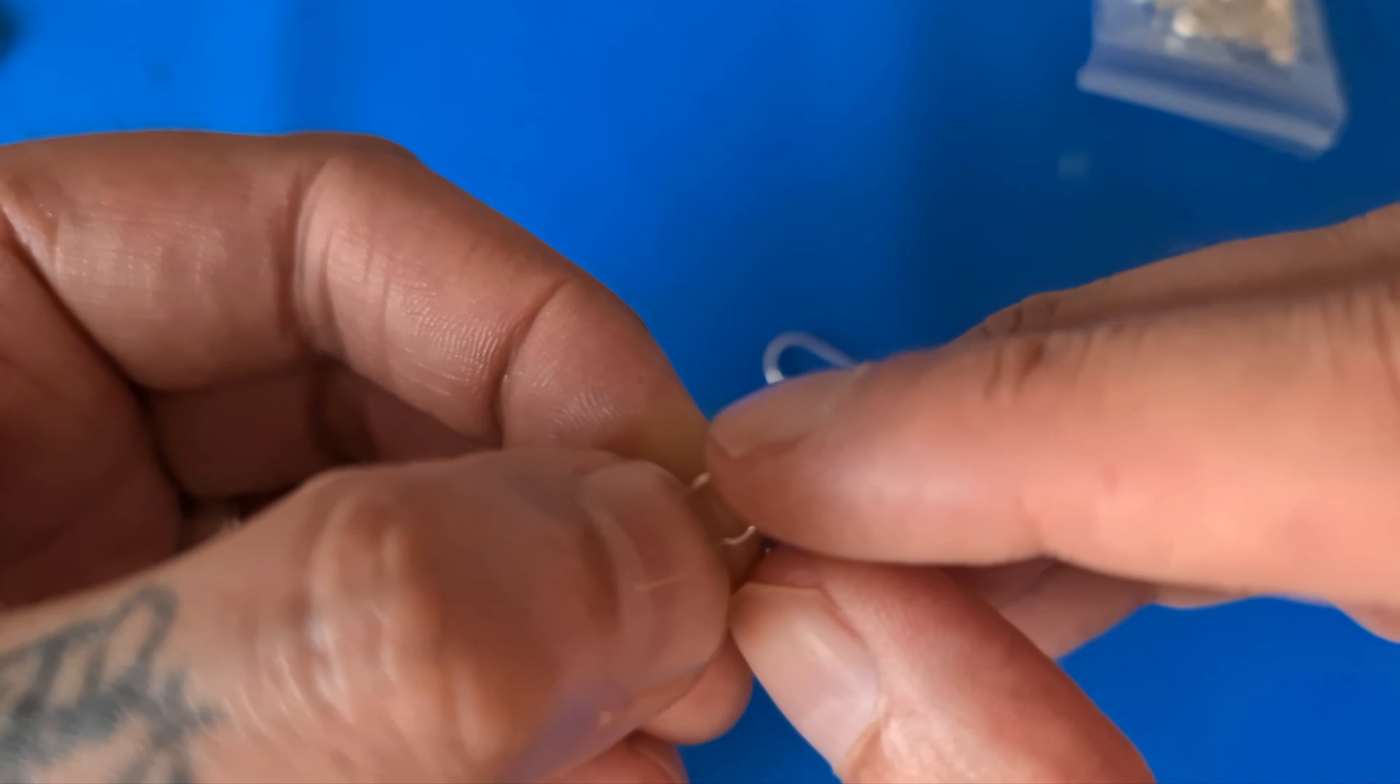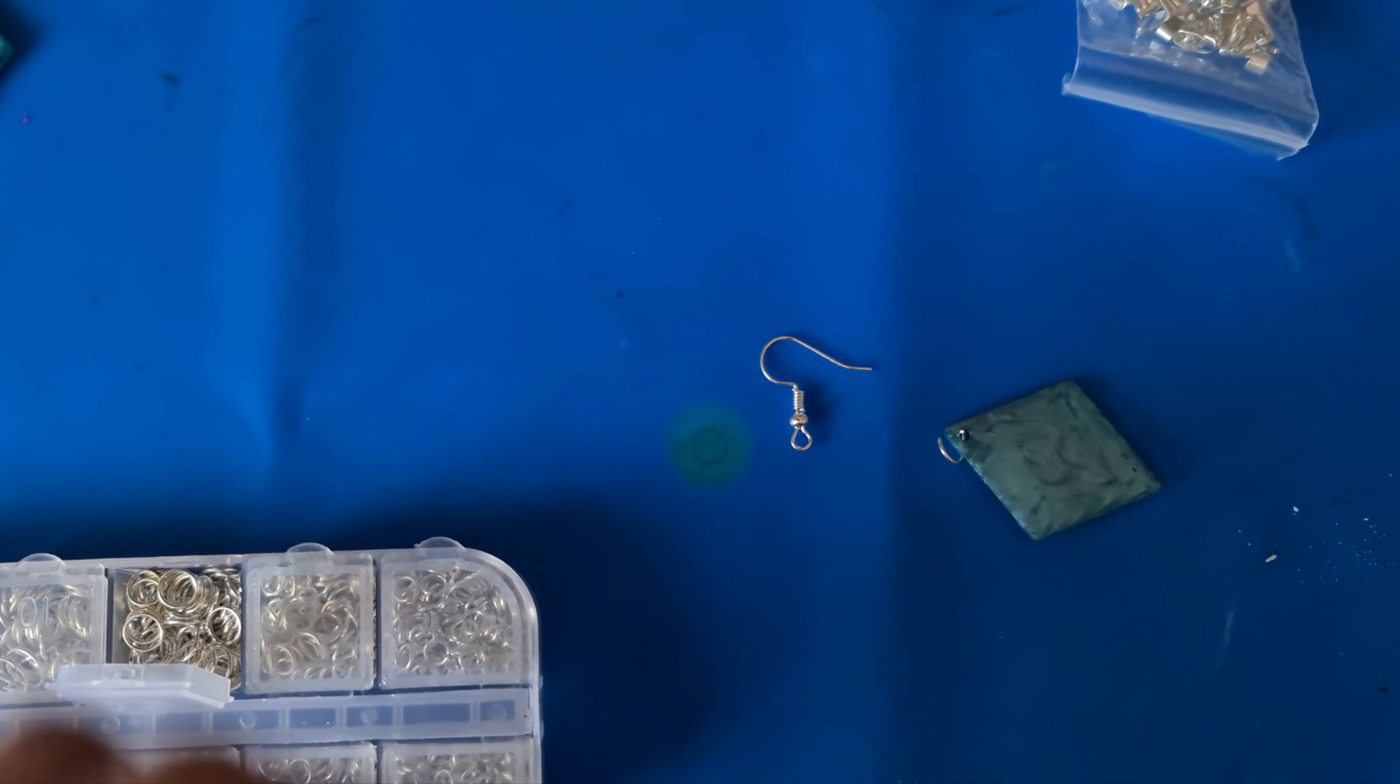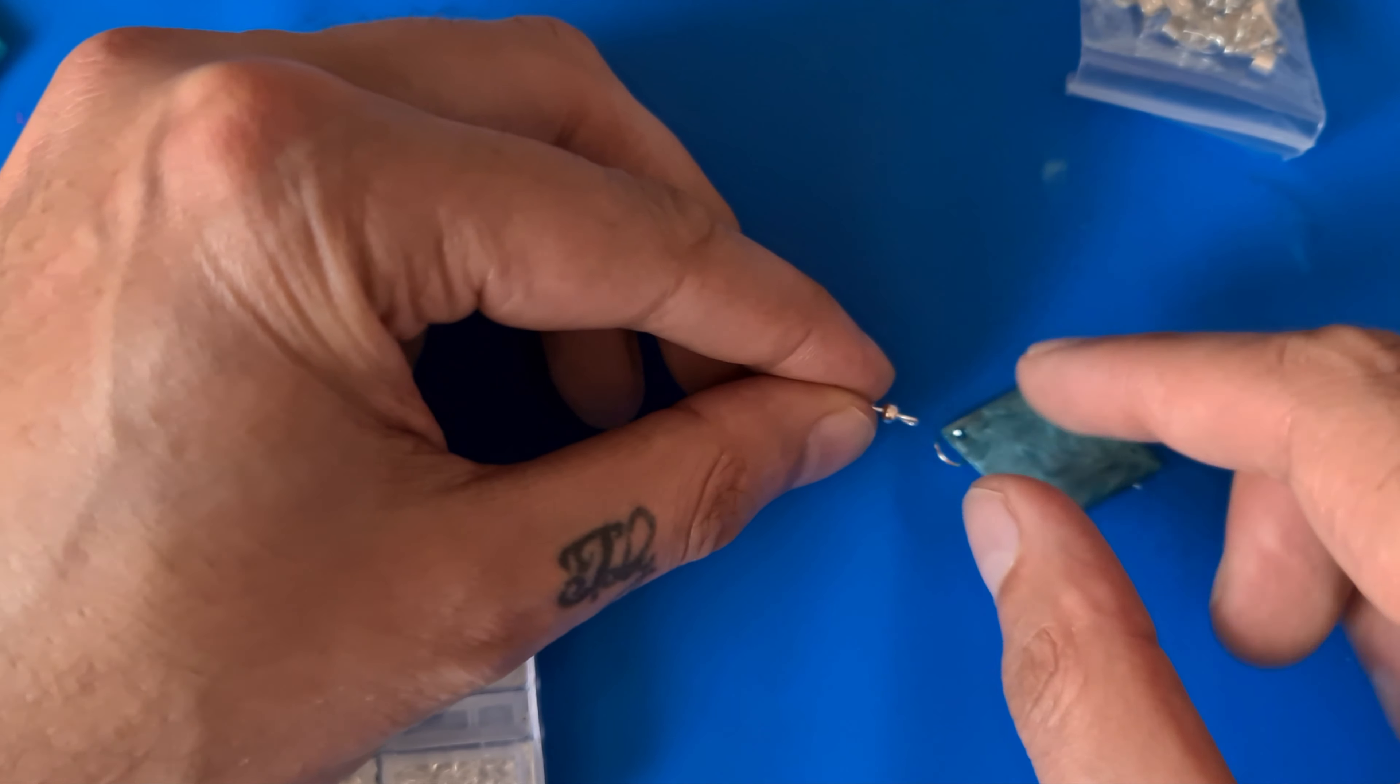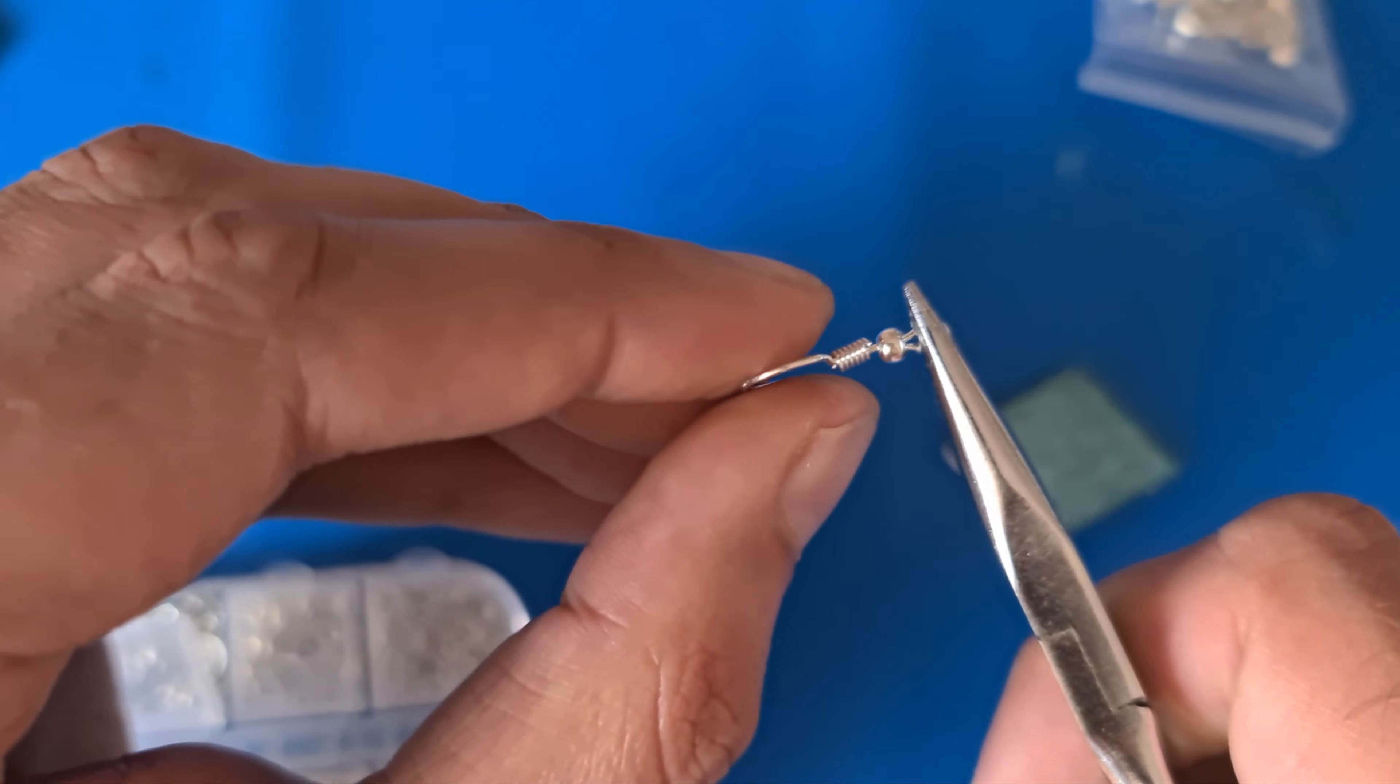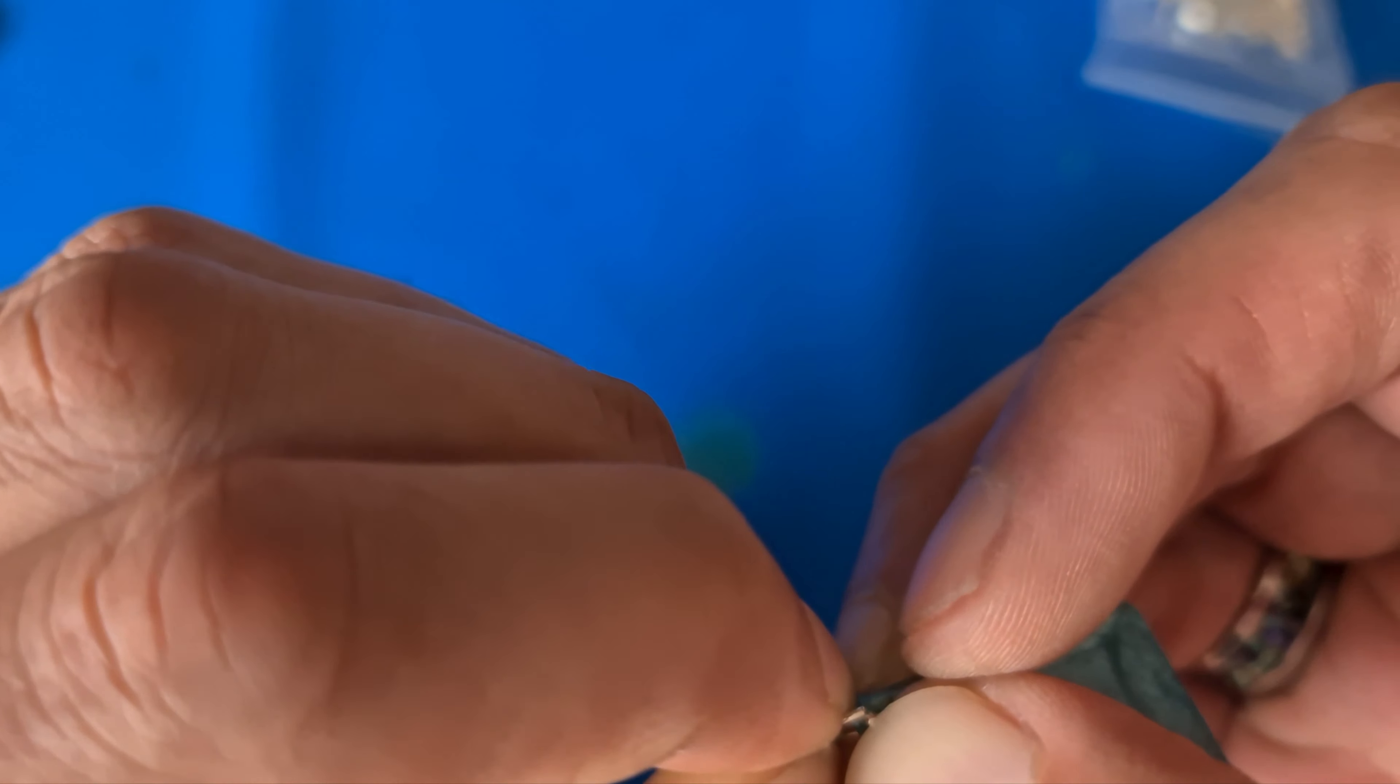To make this one into an earring, I'm just going to take a jump ring and just bend that apart, pop it through the hole, and then I'm going to take one of my earring loops. Now you can do this a different way. You can add a smaller jump ring to make these attach because it's going to be round the wrong way. But what you can also do is just gently twist that loop around so it's then facing the correct way for that loop that's on there. Then we can just pop that through.